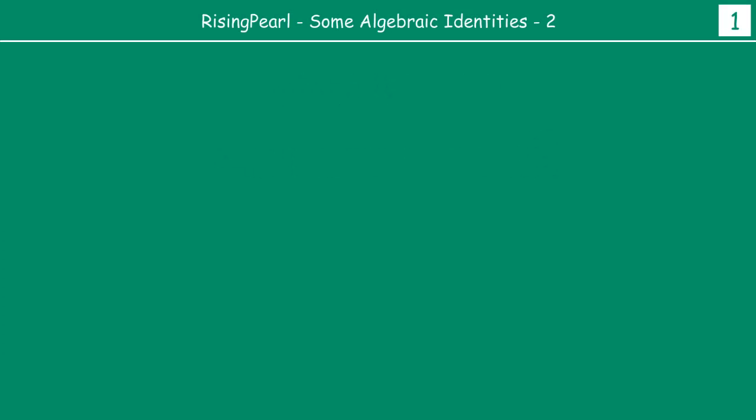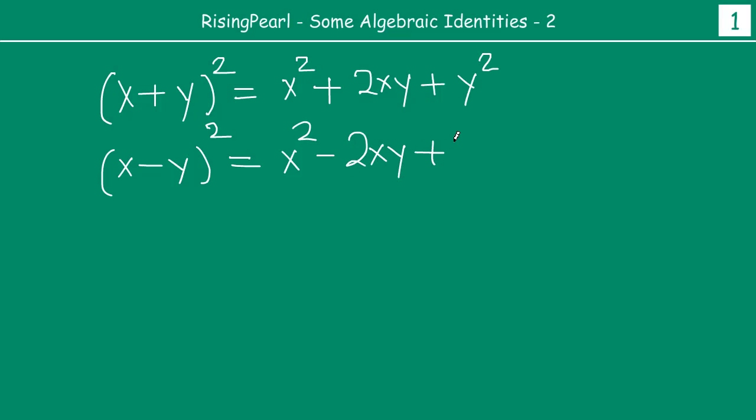In the last webisode, we have seen that x plus y whole square, this was our first identity. If you have x plus y whole square, this is equal to x square plus 2xy plus y square. Now let us talk about a second identity. We have seen that if you have x minus y whole square, this is written as x square minus 2xy plus y square.